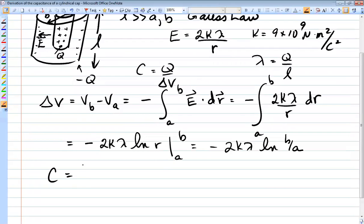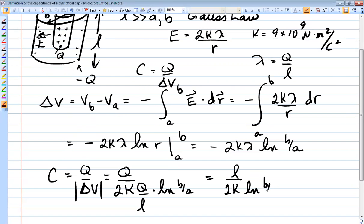We now write this as Q over delta V. And so this is Q over 2k, taking the absolute value here. You don't have negatives for definition of capacitance. Now lambda is Q over L, ln B over A. And so the final answer is L over 2k ln B over A. Notice how the Q drops out. The capacitance of a capacitor has nothing to do with the charge on it. It's purely a geometric property.